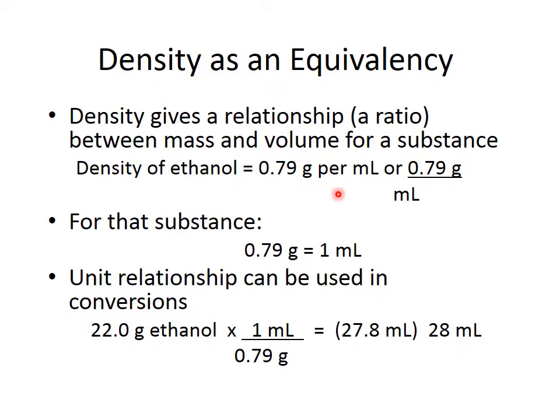When we go to do density problems, the easiest way to use density is as an equivalency statement that gives you a conversion factor. Here is an example. The density of ethanol is written as 0.79 grams per milliliter. We can write it like this, which is a conversion factor. Basically, when you give a density, you are saying that a certain volume, one milliliter, is a specific mass for that substance. So it is an equivalency statement, and this fraction here now is equal to one.